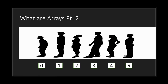If you're new to arrays, you can think of an array as basically a line. You have someone at the front of the line, someone at the back, and people in between. The person at the front is at position zero. If you're second in line you are at position one, third is position two, and so forth.